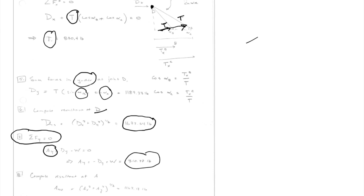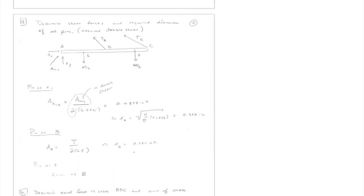Step seven is the last statics step in this problem. Now we have A sub y, A sub x, D sub y, D sub x, the tension in the pulley, and all the geometry — including the angles. Just as we computed the resultant force at D, we compute the resultant force at A.